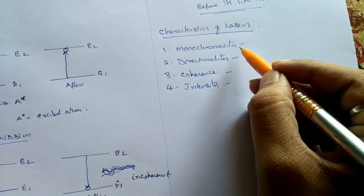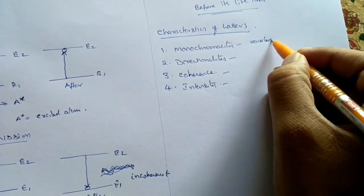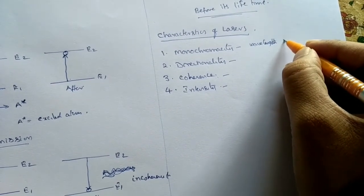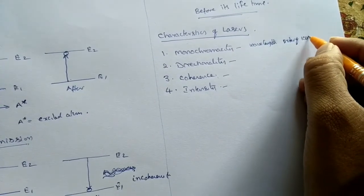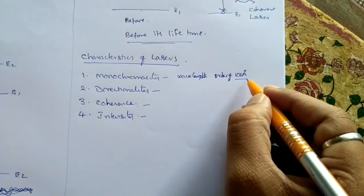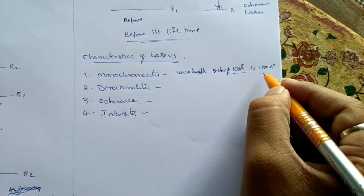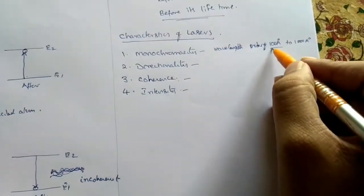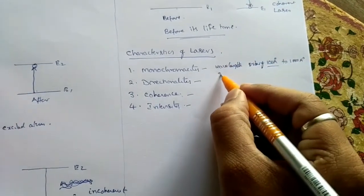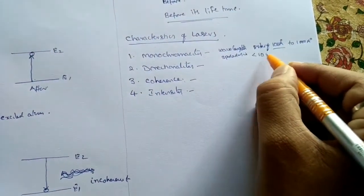First, monochromaticity means the wavelength of laser is around the order of hundred angstroms to thousand angstroms. The order will be hundred, two hundred, three hundred, four hundred or thousand, two thousand, three thousand order. The spreading is around less than ten angstroms.